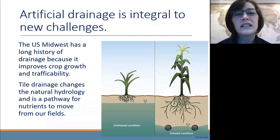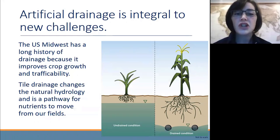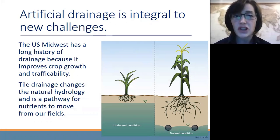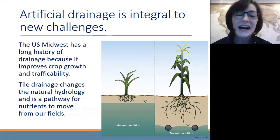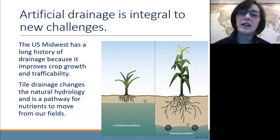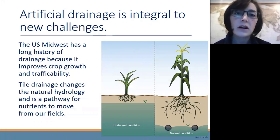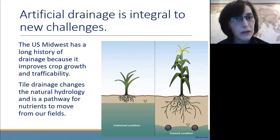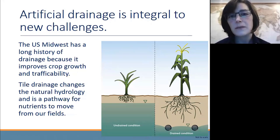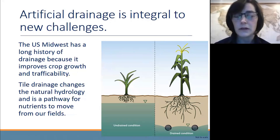In recent years we've also learned that tile drainage changes the natural hydrology — that is, it changes how water would naturally leave a field. That's kind of the point. But tile drainage also serves as a pathway or a conduit for nutrients, primarily nitrogen, to move from our fields where we want those nutrients to be, to downstream waters where we don't want those nutrients to be.